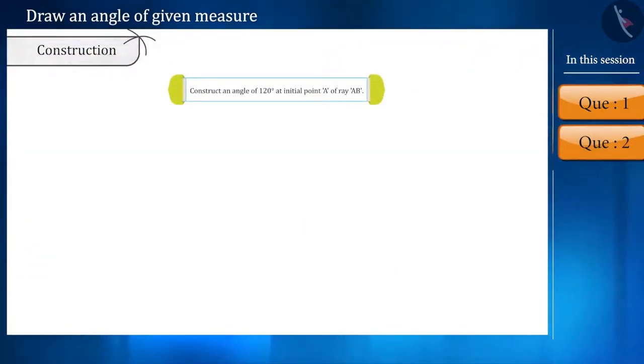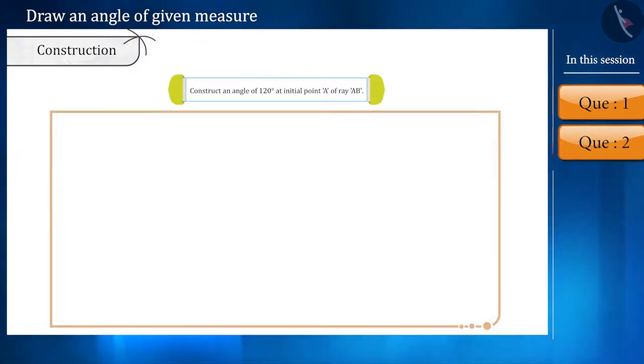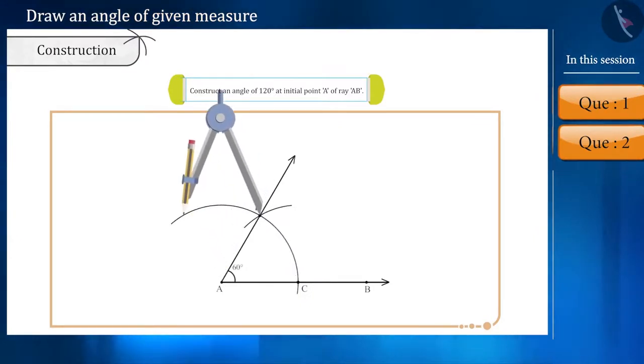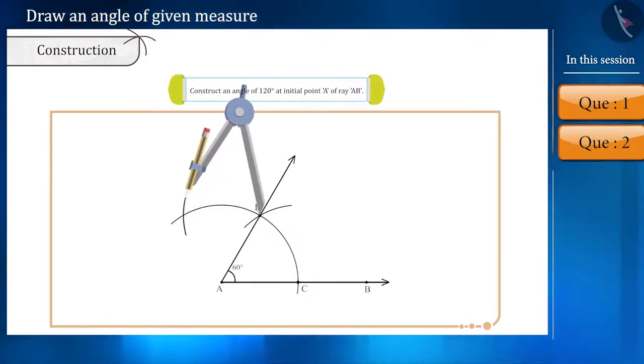So now, if we have to construct an angle of 120 degrees, what will we do? Here first an angle of 60 degrees will be constructed like we did in the previous question. And then, from point D, without changing the measure of the radius, we will draw one more arc, which will intersect arc drawn from point A. And from point A to this intersecting point, we can draw a line to form an angle of 120 degrees.